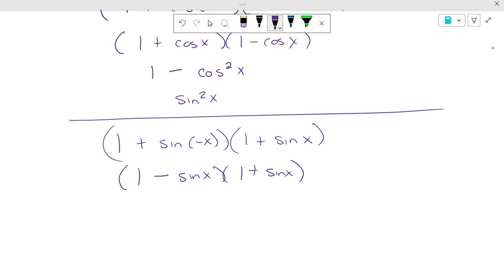1 times 1 is 1. Outers and inners are going to cancel. Sine times sine is sine squared of x. 1 minus sine squared of x is cosine squared of x.